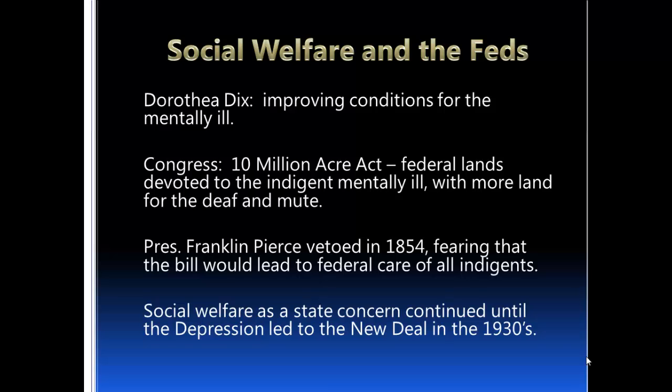Franklin Pierce, who was president at the time, vetoed that bill in 1854 because he was concerned it would lead to the federal care of all indigents, and he didn't believe it was the place of the federal government to do that. And so the efforts of Dorothea Dix were really kind of torn asunder by the president's veto.